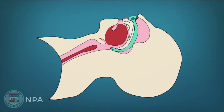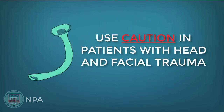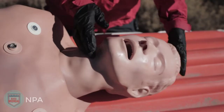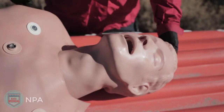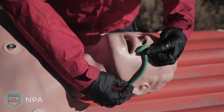NPA stands for nasopharyngeal airway and is used in unresponsive patients, or those who are semi-responsive but cannot adequately maintain their airway and still have a gag reflex. These are great for seizure patients, but be cautious when using an NPA on patients with significant facial and head trauma, as the NPA can find its way through a skull fracture and into the brain. Like the OPA, the NPA has to be measured — from the earlobe to the tip of the patient's nose.